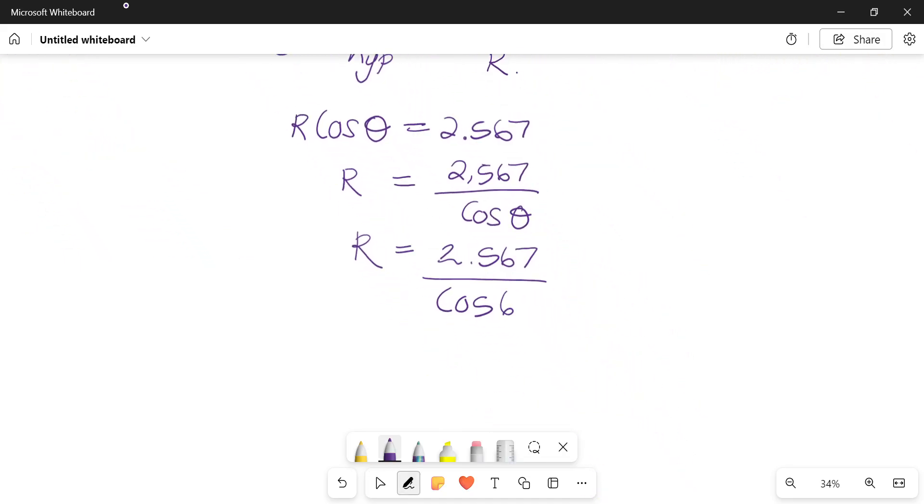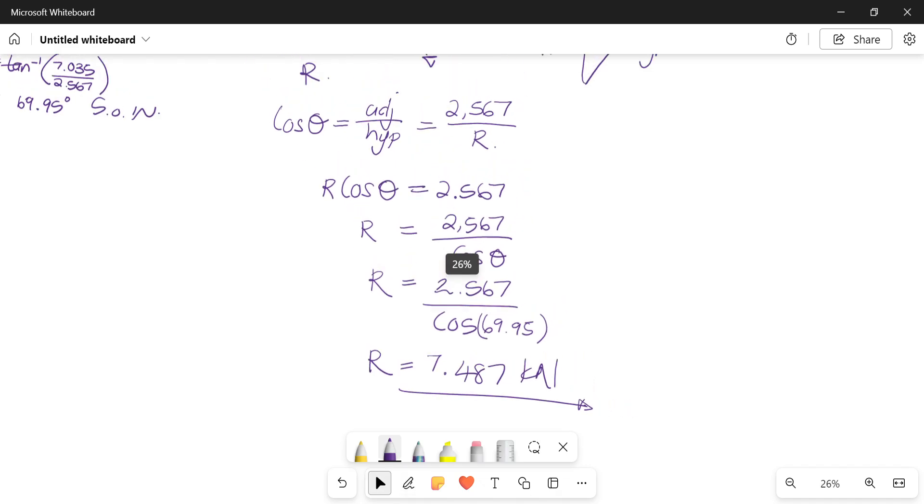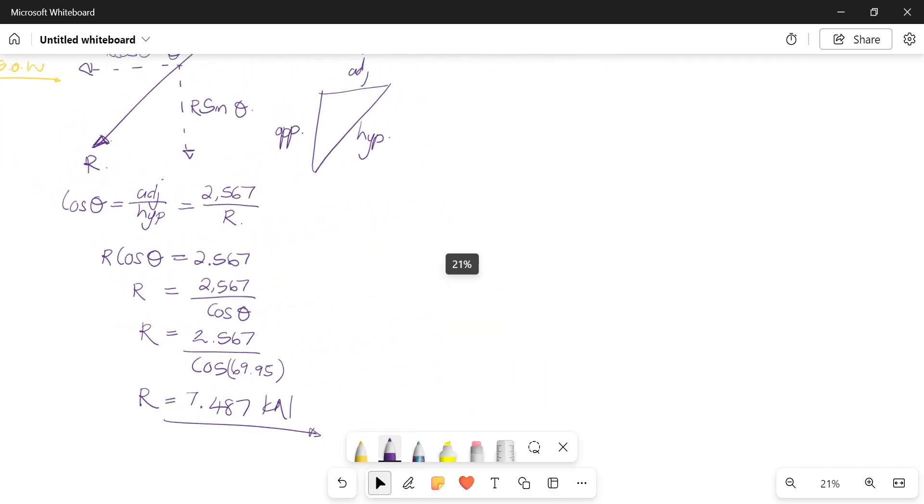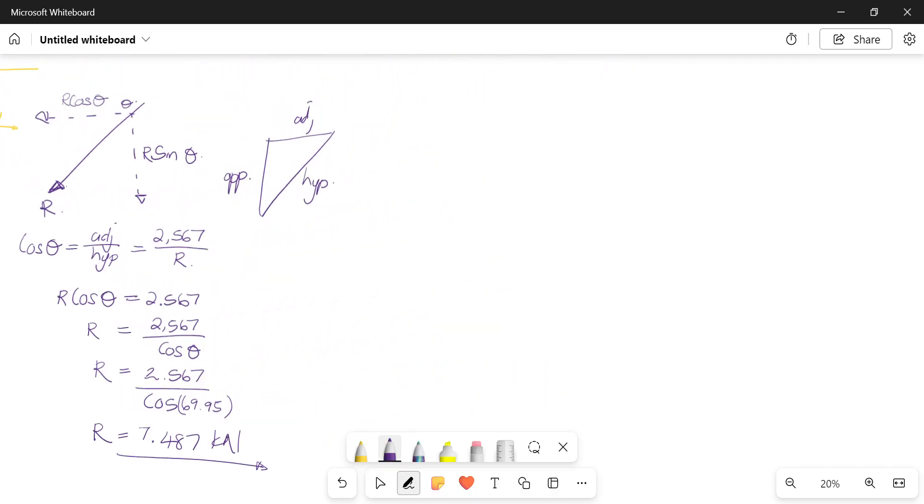We already have the value of our theta: 2.567 over cos of 69.95. Our R, I get 7.487 kilonewtons, and that is the magnitude. That's if you decided to use method one.